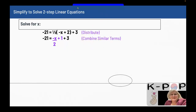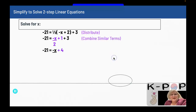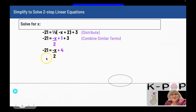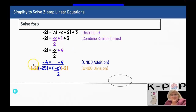Now I combine my similar terms. The similar terms on the right side are plus 1 and plus 3, which combine to give negative 21 equals negative x over 2 plus 4. Now it's in the form of y equals mx plus b, where m is negative one-half and b is 4. I want to move the 4 to the other side, so I subtract 4 from both sides, giving me negative 25 equals negative x over 2.